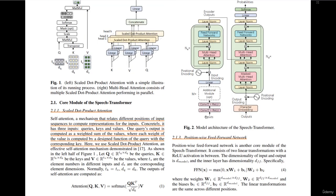Suppose we have an input of dimension batch size by time dimension by frequency dimension — for example, batch size of 1, time dimension 1738, frequency dimension 129. If we pass this directly into the encoder at the level of the attention layers, we would have a 1738×1738 matrix, which is too large. One of the reasons we have these conv layers is so that with the stride, we can reduce the time dimension to work with a smaller matrix in the attention layers.